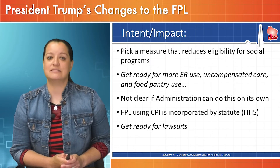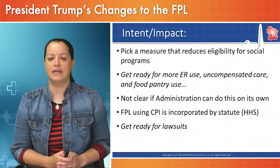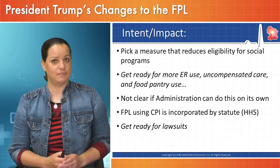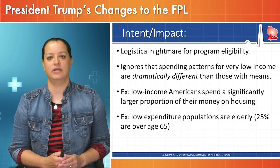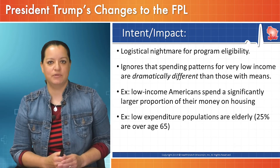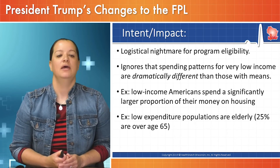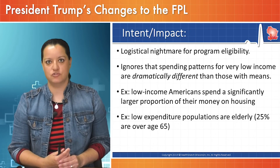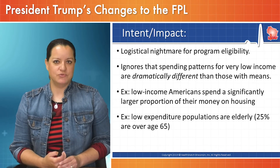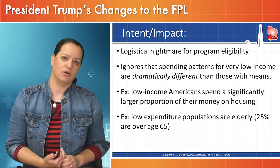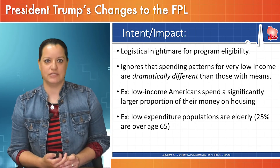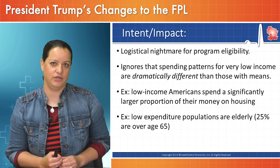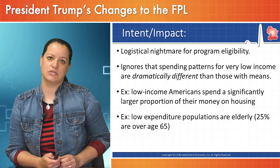The Chained CPI also ignores that spending patterns for the very lowest-income populations are dramatically different from those with means. Looking at an average consumer implementing substitution bias — buying the cheaper alternative when prices rise — doesn't reflect the populations that are the biggest users of social supports. There is extensive research showing that low-income consumers purchase things differently. Take the housing example: if prices go up across the board, will a low-income consumer pick a cheaper apartment? For many low-income consumers, they're already in the cheapest housing available. There will be no substitution bias in that scenario. The research does not support using the Chained CPI in this way.